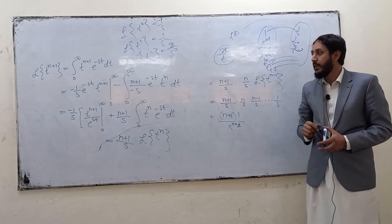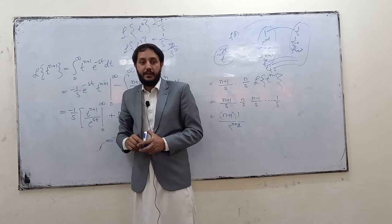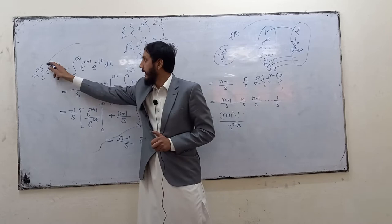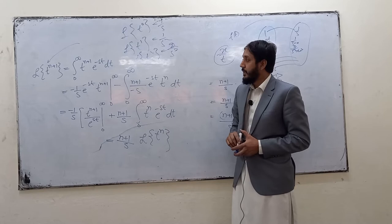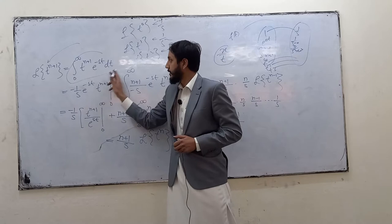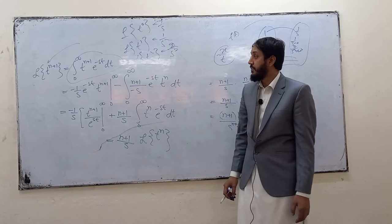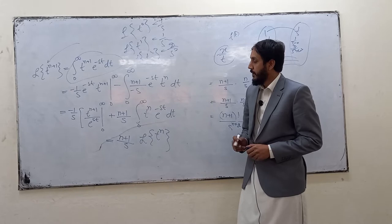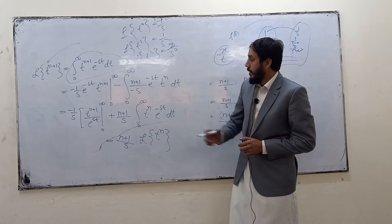What is that Laplace transform of t^(n+1)? So if you focus to the board, we consider this general function, t^(n+1). So this is equal to ∫₀^∞ t^(n+1) e^(-st) dt. So we have this function. Because by definition of the Laplace transform, we have ∫₀^∞ f(t) e^(-st). It's the definition. If you focus to the board, we do integration by parts. What do we do? Integration by parts.